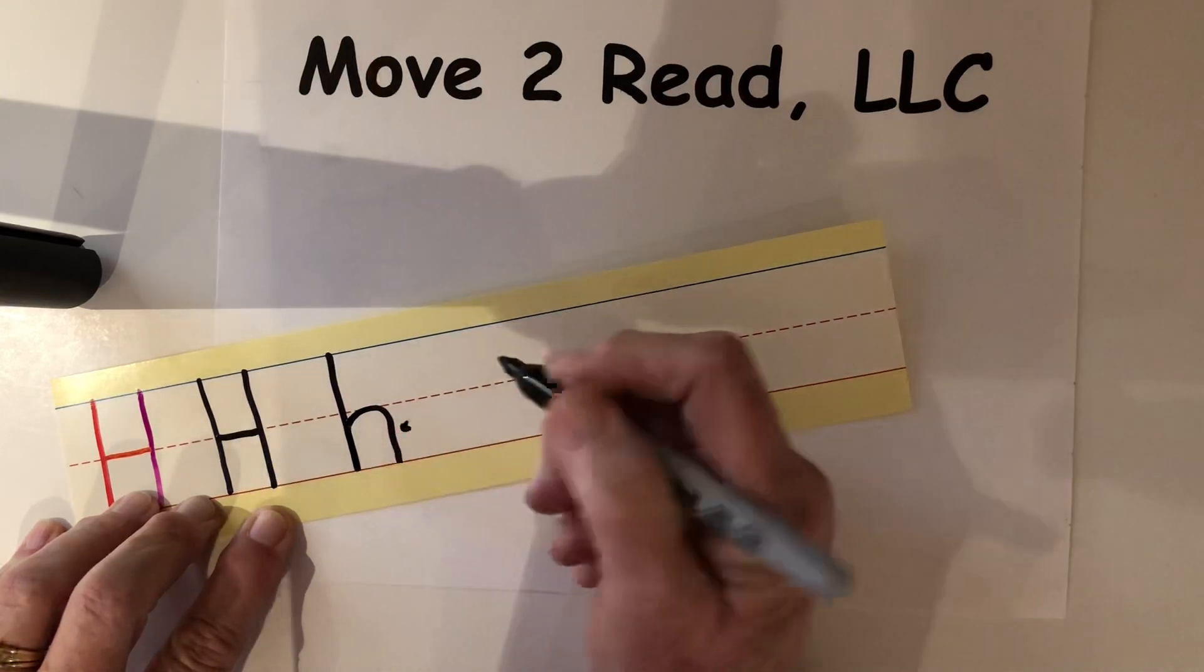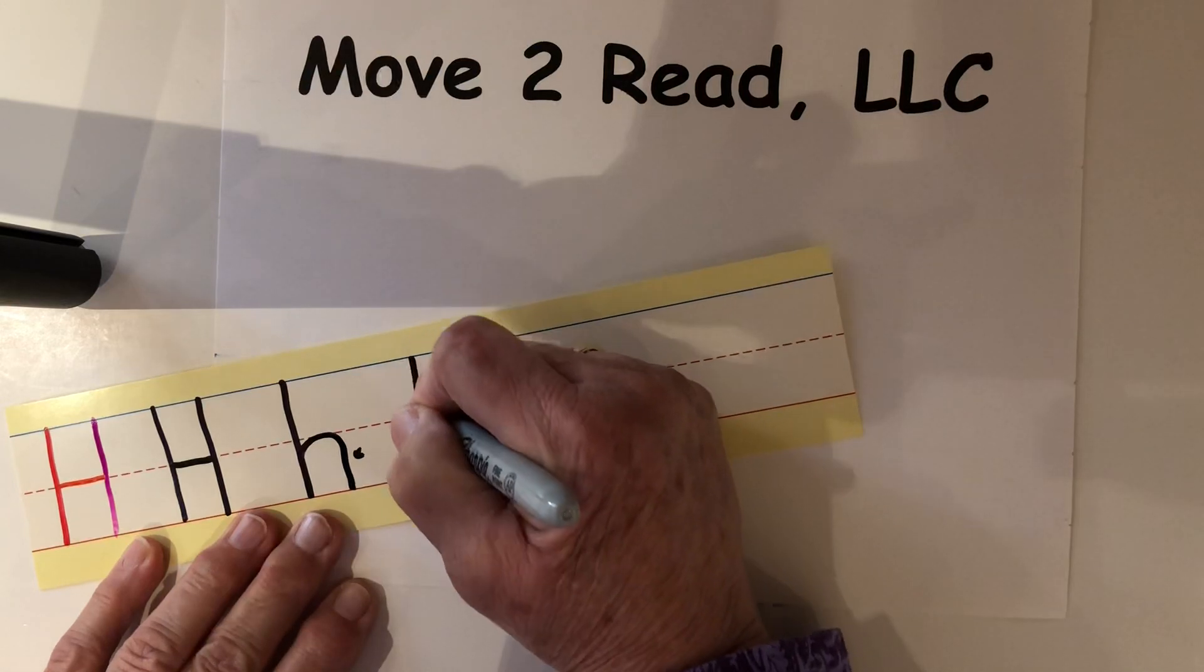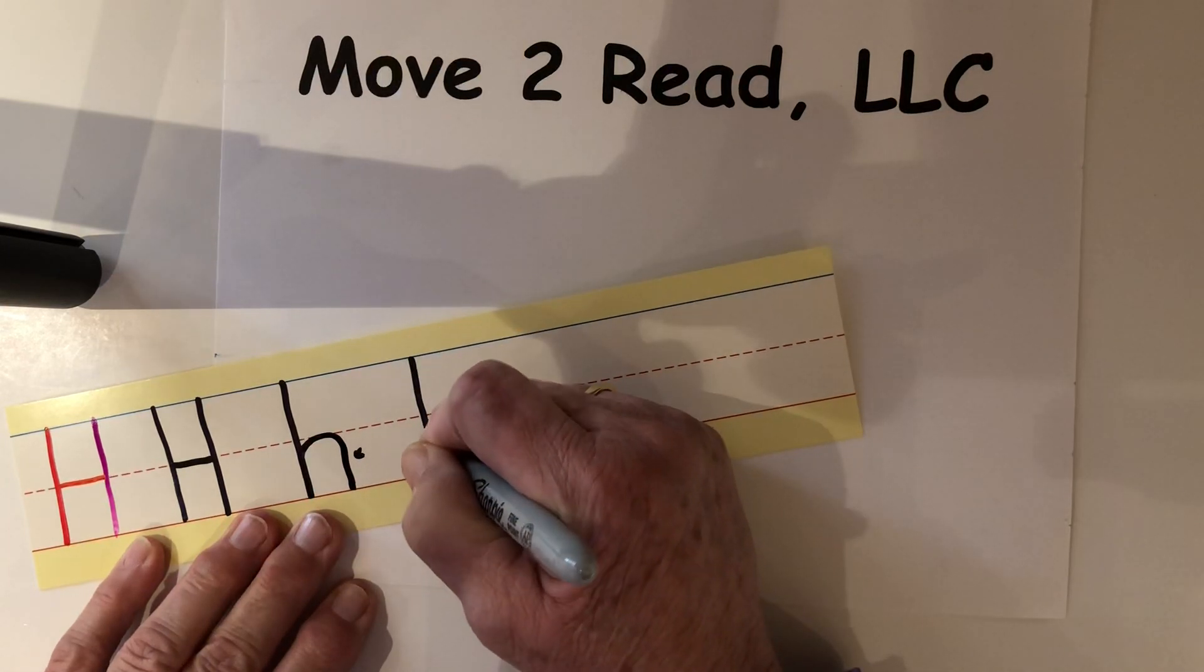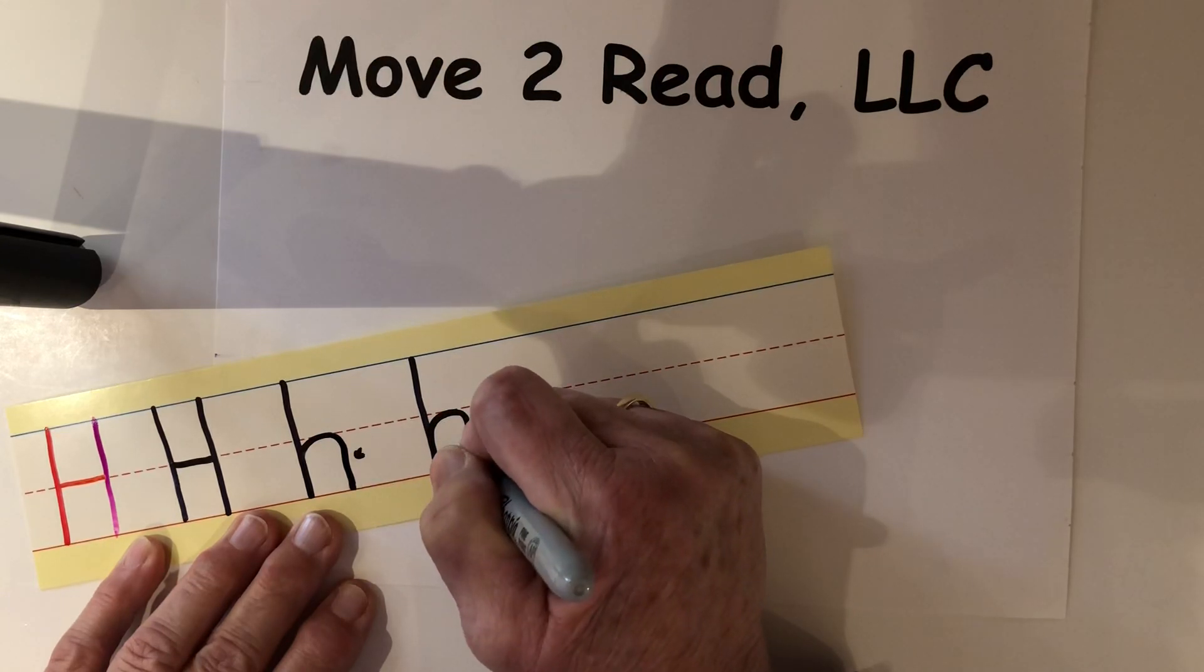Oh, Mrs. Patton, look at that right there. So we're going to start in the sky, fall to the ground, trace up, stop about here, make a hump.